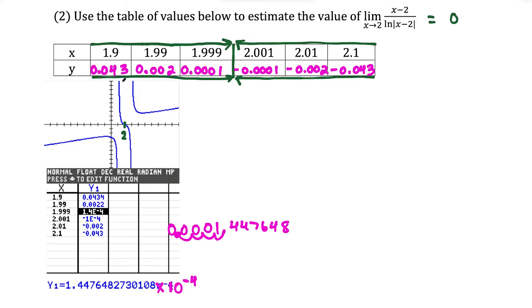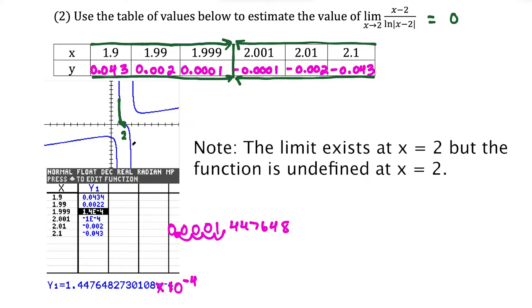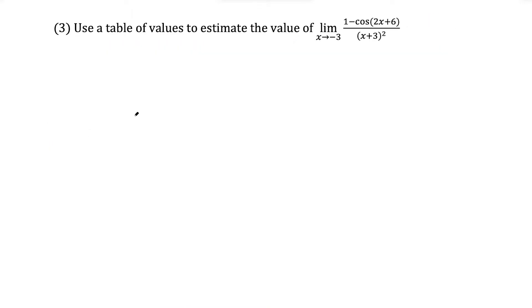We could also look at the graph: coming in from the left side we're heading towards the point (2, 0), and coming in from the right side towards x equals 2 we're also heading to the point (2, 0). So our limit checks out.